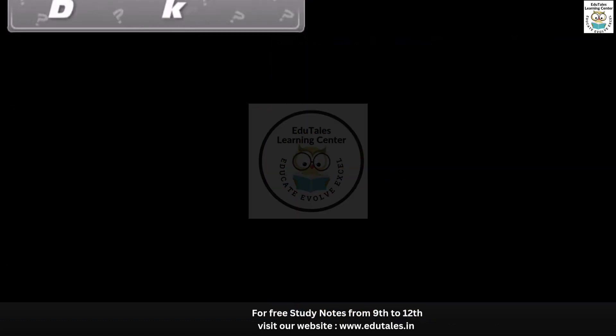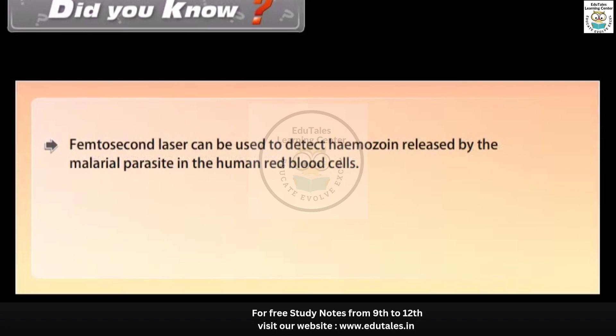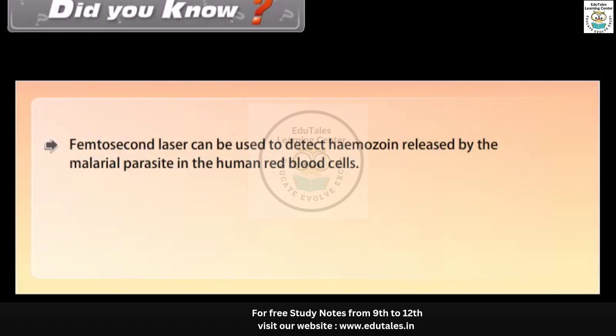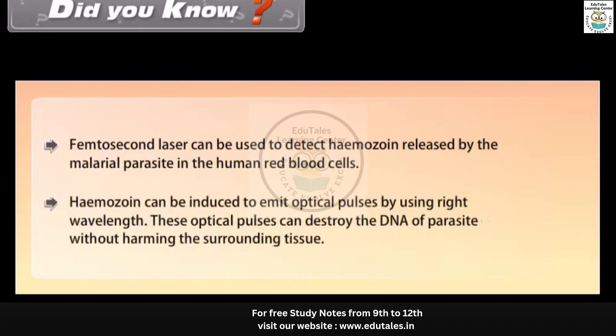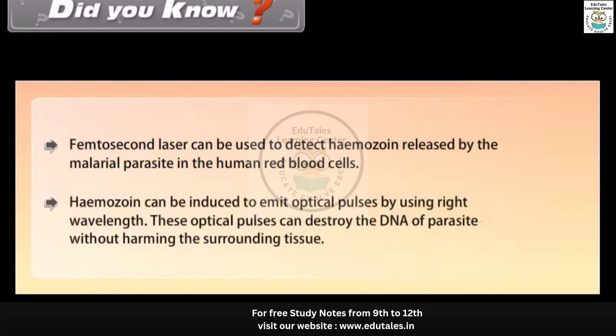Did you know? Femtosecond laser can be used to detect haemozoin released by the malaria parasite in human red blood cells. Haemozoin can be induced to emit optical pulses by using the right wavelength. These optical pulses can destroy the DNA of the parasite without harming the surrounding tissue.